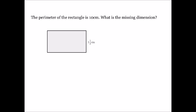The perimeter is the total distance around the shape — the sum of all its dimensions. We only have one dimension, but opposite sides of a rectangle are equal, so the opposite side is also one and one third centimetres. We add these two lengths: one and one third plus one and one third. Converting to improper fractions gives four thirds plus four thirds. Since the denominators are equal, we add numerators to get eight thirds.